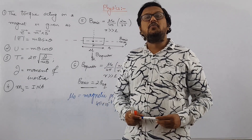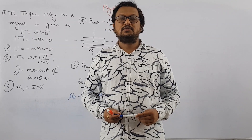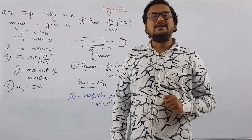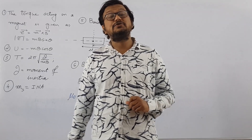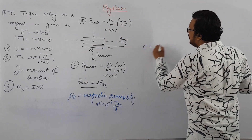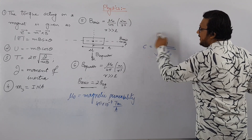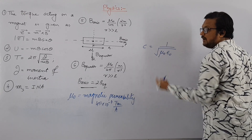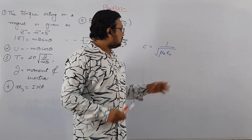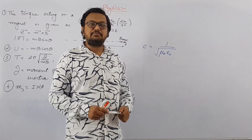There are two more units for mu_0. Using the relation that speed of light c equals 1 over under root of mu_0 epsilon_0, square this equation, make mu_0 the subject, and find the unit. Try to obtain another unit for mu_0 using this approach.